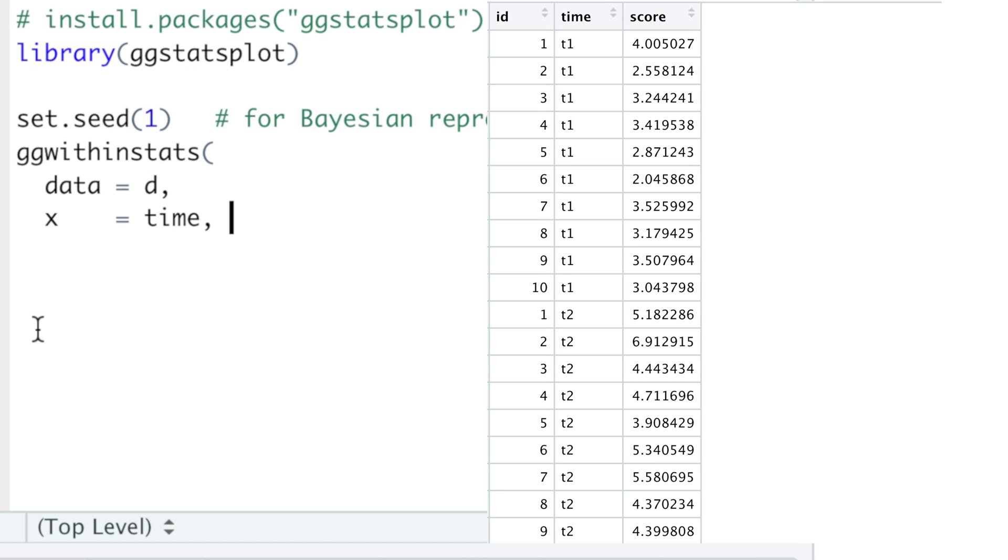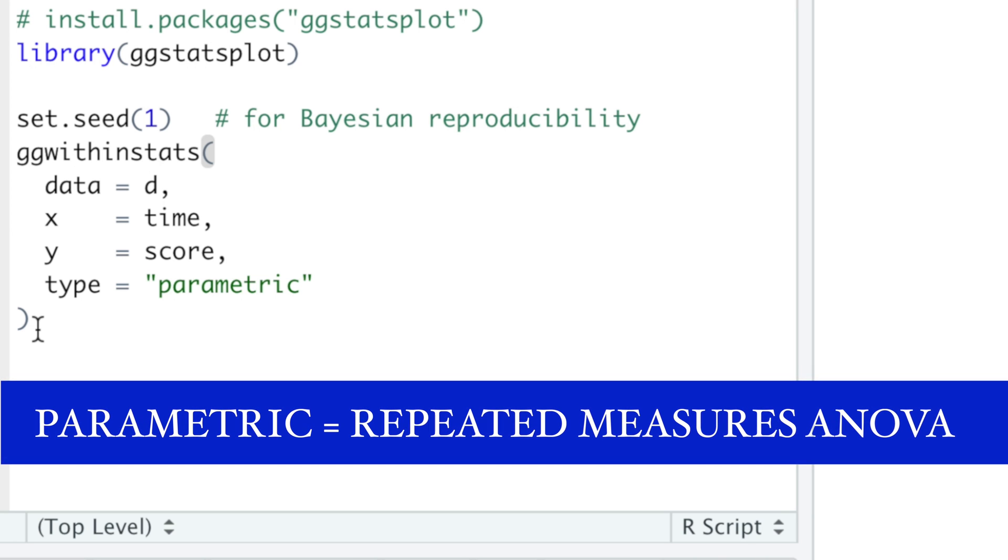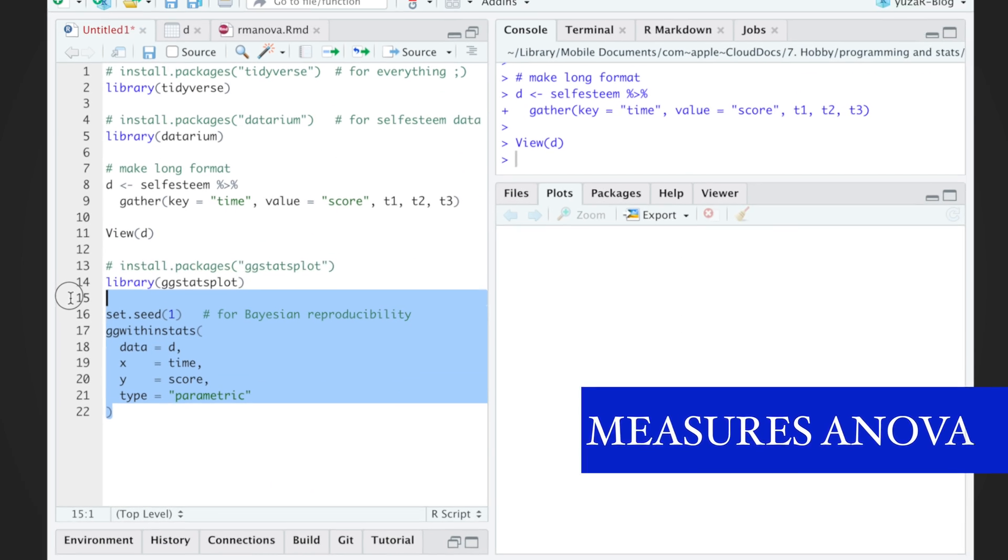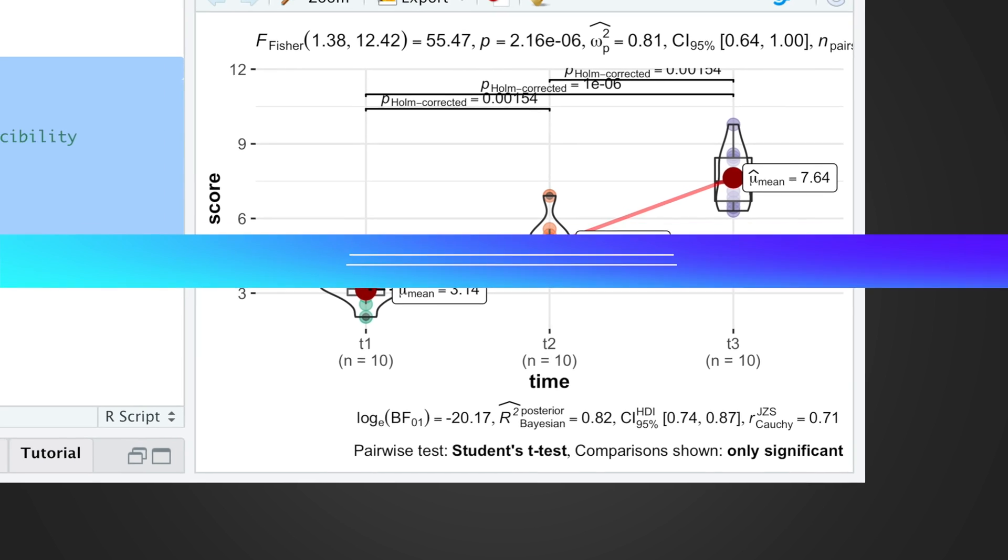then x as grouping variable time, y will be the scores of self-esteem, and we choose the parametric type of statistical approach, which tells ggwithinstats to conduct repeated measures ANOVA. Such simple command results in this statistically-rich and publication-ready plot.